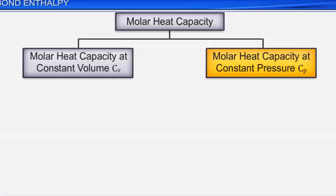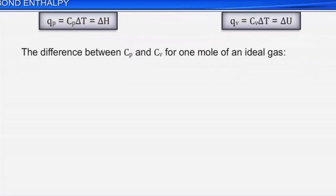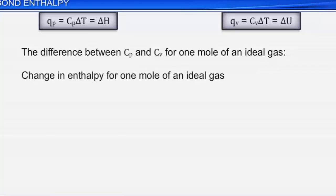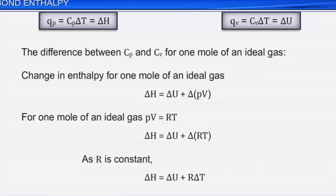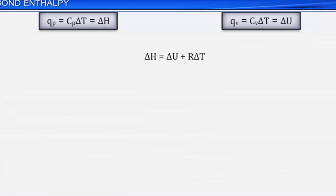The difference between Cp and Cv for one mole of an ideal gas can be derived as follows. The change in enthalpy for one mole of an ideal gas: ΔH = ΔU + Δ(PV). For one mole of an ideal gas, PV = RT, so ΔH = ΔU + RΔT. On substituting the values of ΔH and ΔU: Cp × ΔT = Cv × ΔT + R × ΔT. Since ΔT = 1, we get Cp = Cv + R, or Cp – Cv = R.